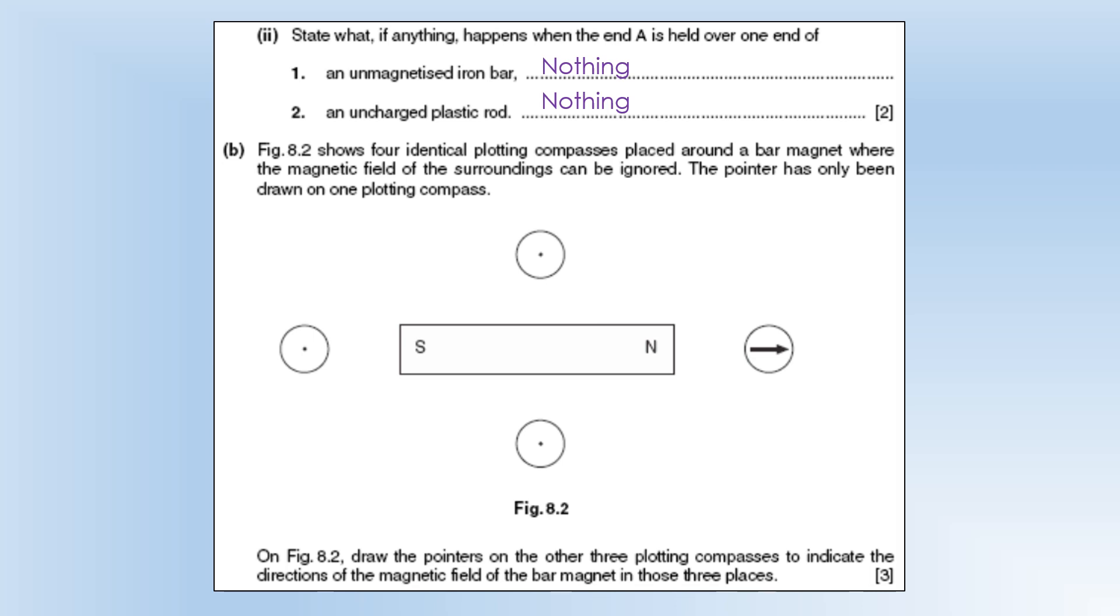The diagram shows four identical plotting compasses placed around a bar magnet where the magnetic field of the surroundings can be ignored. The pointer has only been drawn on one plotting compass. Draw the pointers on the other three to indicate the direction of the field. So this one is going here. The compass will point towards the south pole because it always goes from north to south. And here it will just follow the field lines. So field lines go from the north pole round to the south pole. So the compass will align itself with those field lines.